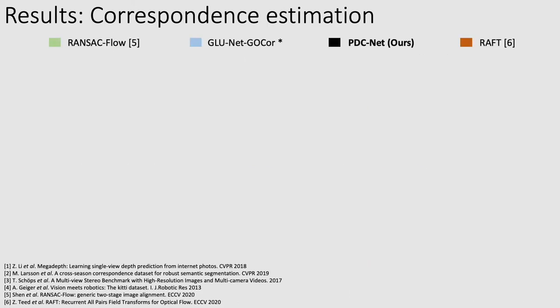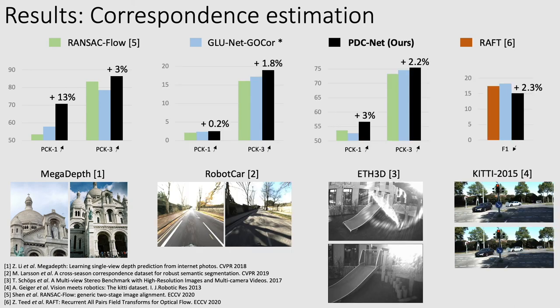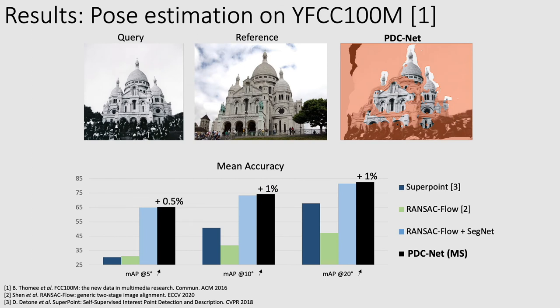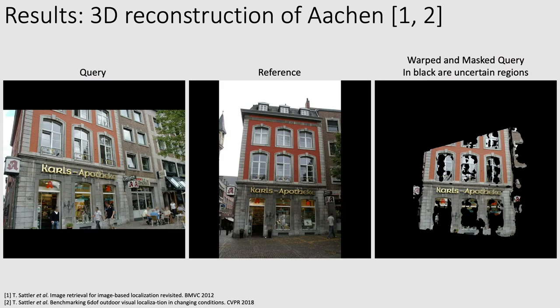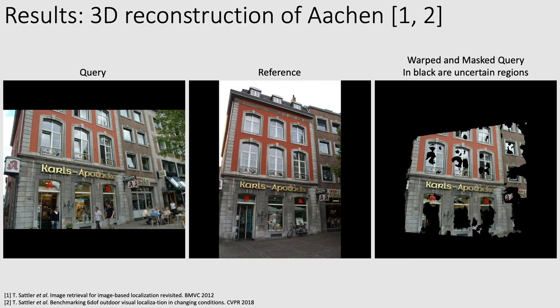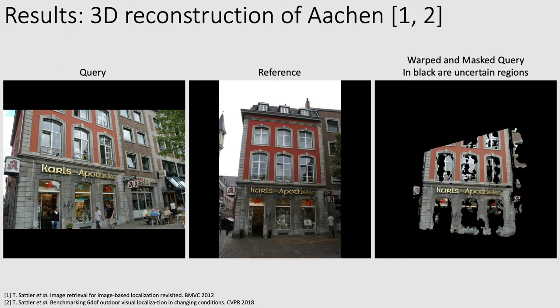In terms of metrics, PDCNet outperforms previous state-of-the-art on multiple benchmarks such as MegaDepth, RobotCar, ETH3D, and KITTI. We also evaluated PDCNet for pose estimation on YFCC by using only the predicted confident matches. Our method outperforms the previous dense state-of-the-art as well as standard sparse methods. With PDCNet, we can also do dense 3D reconstruction. The first step is to find dense confident matches, and our approach finds matches even for large viewpoint changes. We then feed all of these confident matches to COLMAP, and this is the resulting 3D reconstruction of the Aachen city, where buildings are reconstructed with high quality.